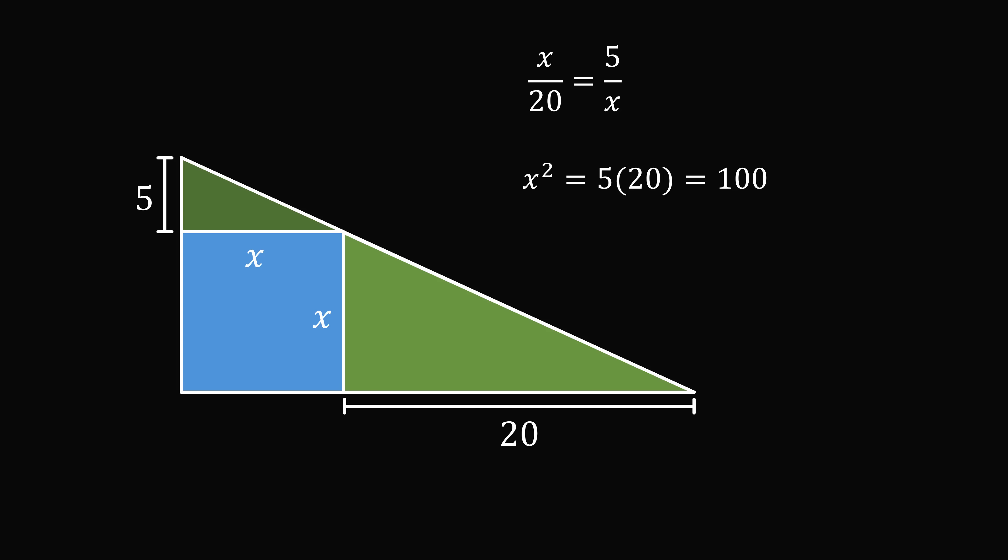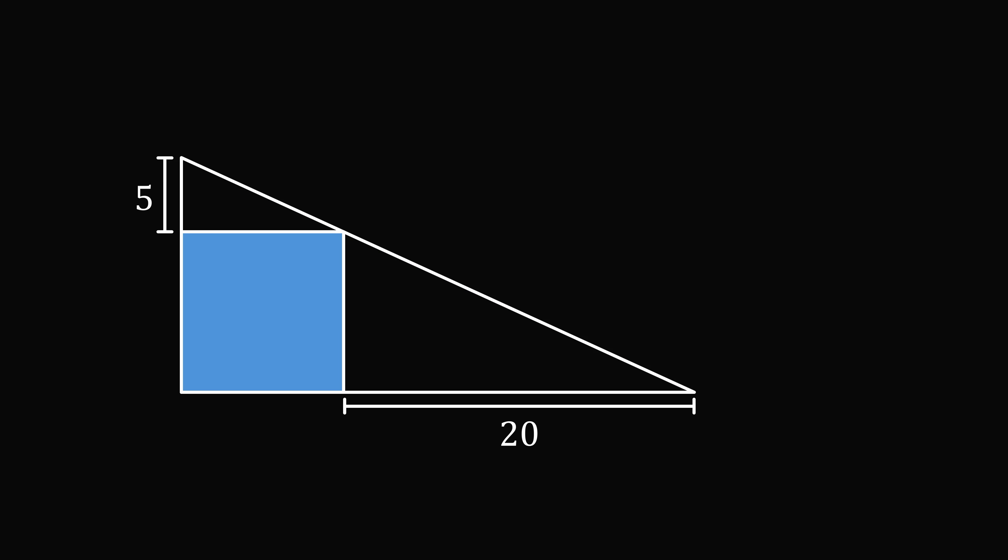So the square has an area that's equal to 100. So that's one way to solve the problem. But here's a fun way that involves outside the box thinking. First, construct a parallel line to the bottom side, and then construct a parallel line to the left side.